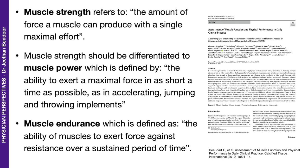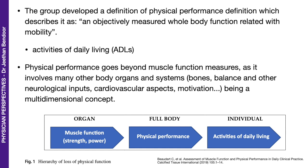All three — muscle strength, muscle power, and muscle endurance — are important for everyday living. The group defined physical performance as an objectively measured whole body function related with mobility. It is important to look at activities of daily living like climbing stairs or buttoning your shirt. Physical performance goes beyond muscle function as it involves many other organs and systems such as bone, balance, and other neurological inputs, so you need to look at the individual as a whole.